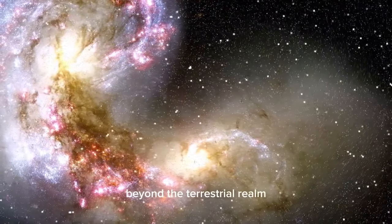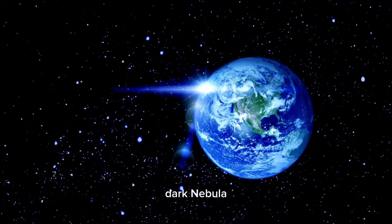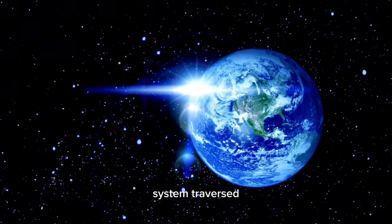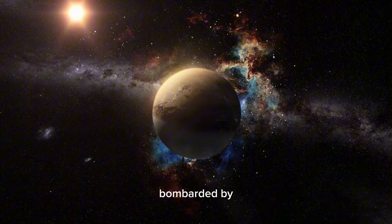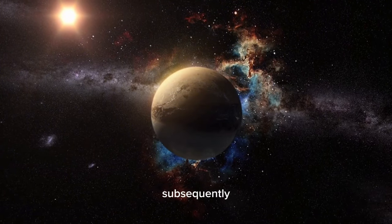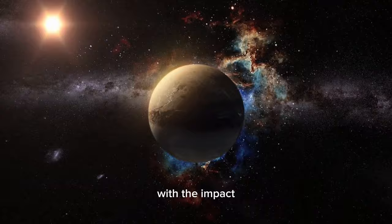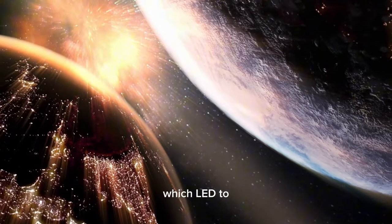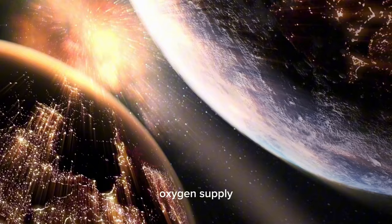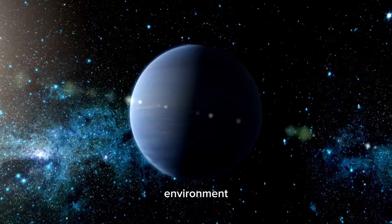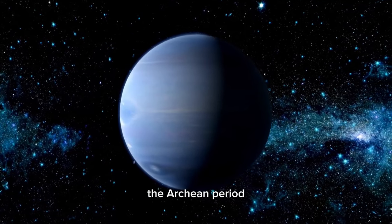Beyond the terrestrial realm, the solar system encountered the enigmatic dark nebula. As the solar system traversed this cosmic mist, Earth found itself bombarded by cosmic rays. Subsequently, the planet entered another ice age, beginning with the impact on plant life, which led to a significant reduction in atmospheric oxygen supply. The surface environment regressed to an anaerobic state, resembling the conditions of the Archean period.